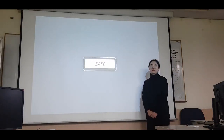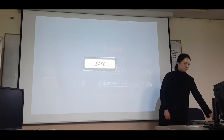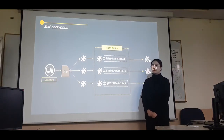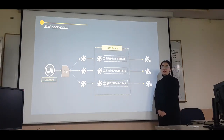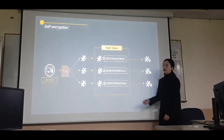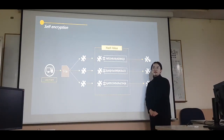Next is the Safe Network. Safe Network uses self-encryption technology. Self-encryption is a method of encrypting a file using different pieces of the same file. The hash value of one piece acts as the encryption key for another piece.